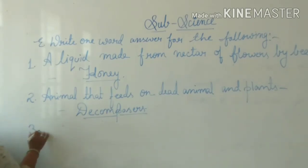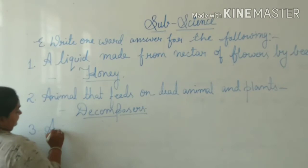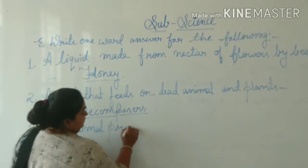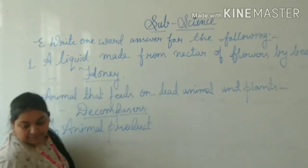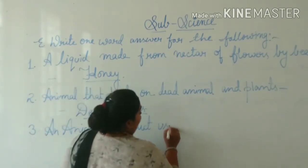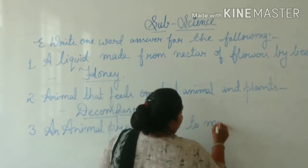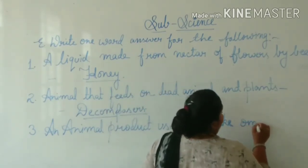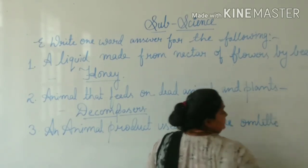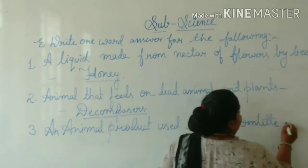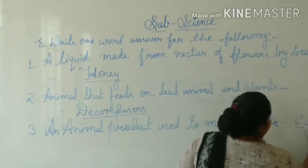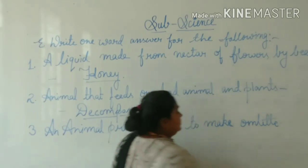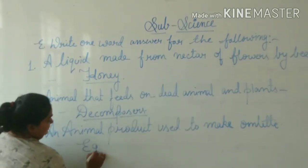Number three: an animal product used to make an omelette. I know everyone knows about omelettes. The answer is egg, given by a hen. So, up to number three, the answer is egg.